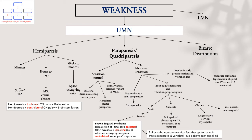However, if both aspects of sensation are equally affected, look at the onset and time course. Acute presentations would suggest trauma, which could lead to Brown-Séquard syndrome — essentially a hemisection of your spinal cord. You will find ipsilateral upper motor neuron weakness with ipsilateral loss of vibration sense and proprioception, with contralateral loss of pain and temperature. This nicely reflects the neuroanatomical fact that your spinothalamic tracts decussate one to two vertebral levels above the root supply.